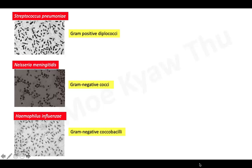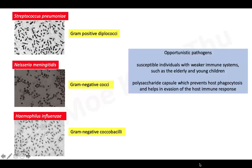These are opportunistic pathogens. It means they usually stay in the human respiratory tract without causing any harmful effects. But they cause problems in children and elderly people because of weak immunity. They have a capsule composed of polysaccharides that prevents phagocytosis by the host and is capable of evading the host immune response. When they do cause problems, it is serious and lethal.